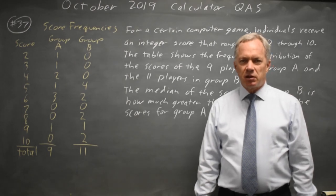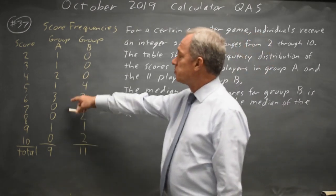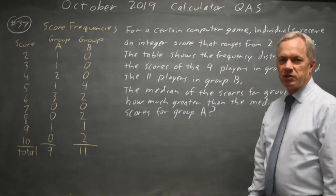This is question 37. College Board gives us a frequency distribution and asks for the difference in medians for these scores.